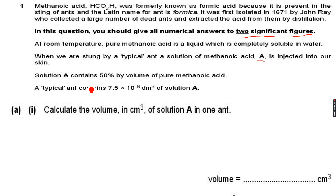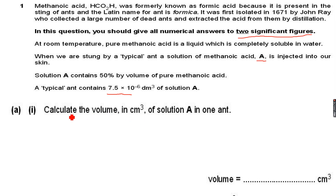A typical ant contains 7.5×10⁻⁶ dm³ of solution A. Calculate the volume in centimeter cubed of solution A in one ant. Since 1 dm³ equals 1000 cm³, we simply multiply to convert.